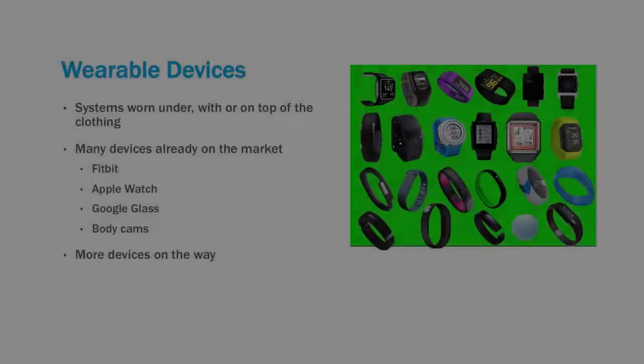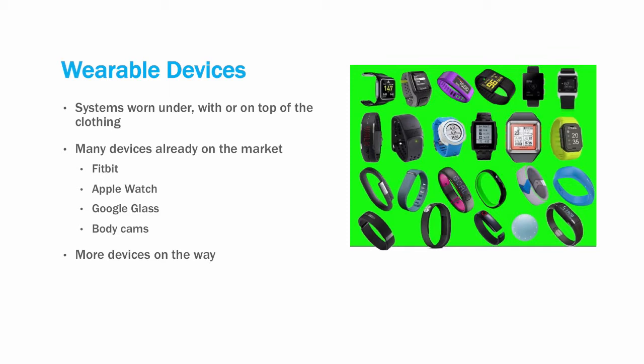The last type of computer system I'll talk about is the wearable device. These systems are designed to be worn with, on, or on top of clothing. There are already many devices on the market. These include Fitbits, Apple Watch, Google Glass, and body cams.